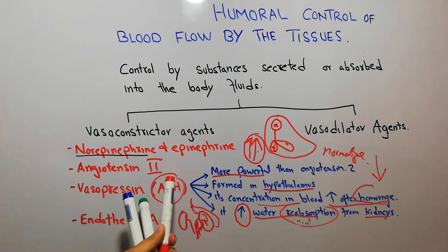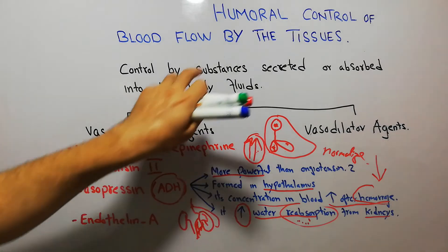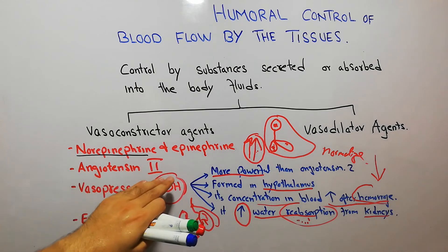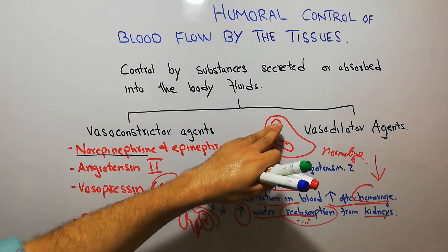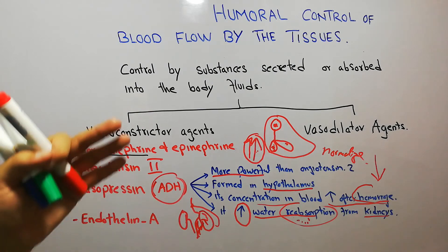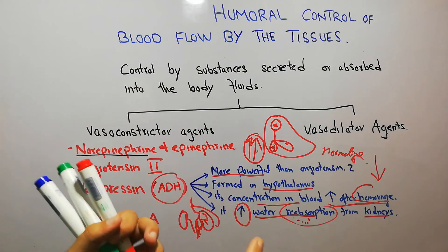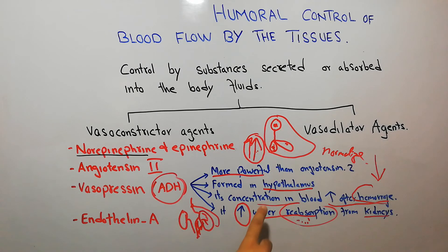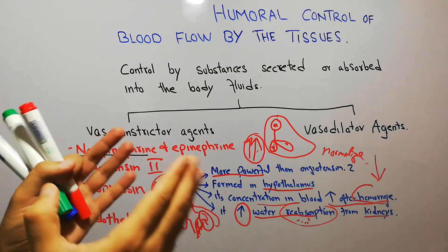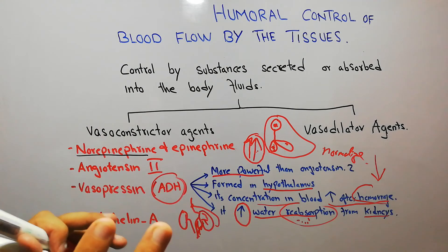So vasopressin or antidiuretic hormone has many functions, but regarding the humoral control of blood flow, it is a powerful vasoconstrictor — more powerful than angiotensin-2. It is formed in the hypothalamus, travels to the posterior pituitary, and is released into the blood according to demand: fluid loss, decreased arterial pressure, or dehydration. It causes vasoconstriction to increase arterial pressure and promotes reabsorption of filtered water from the kidneys back into the blood.